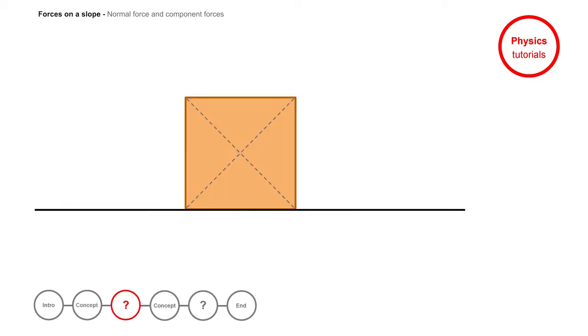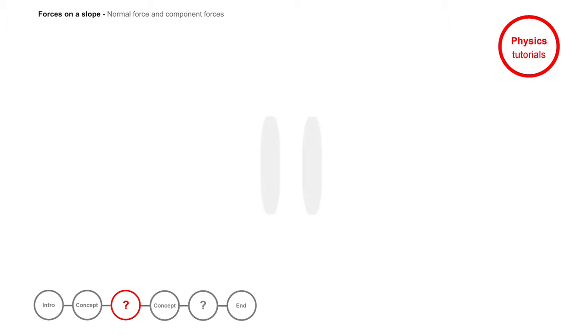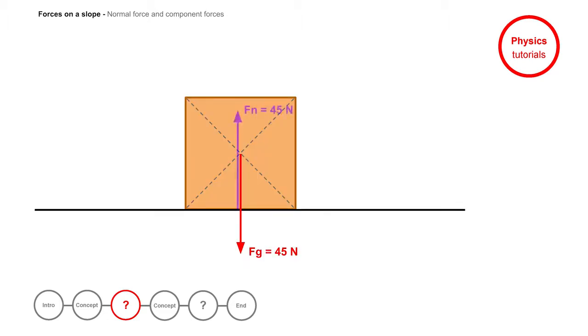Let's see if it's clear to you. This box is placed on a table. The force of gravity pulling the box down is 45 N. What is the magnitude and direction of the normal force? Did you answer 45 N upwards? Well done!